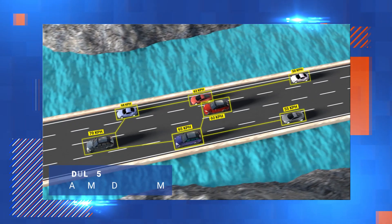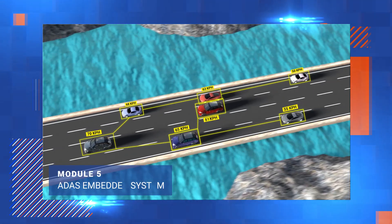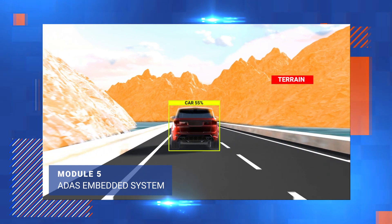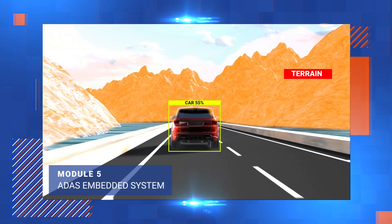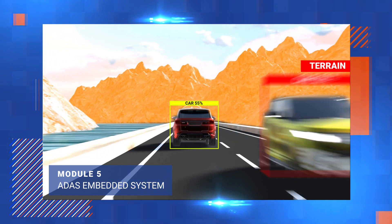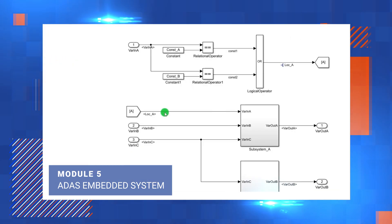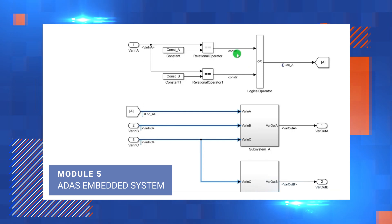In Module 5, you will learn advanced driver assistance systems which covers traffic sign recognition, adaptive cruise control, to name a few. You will also learn the basics of Autosar architecture.